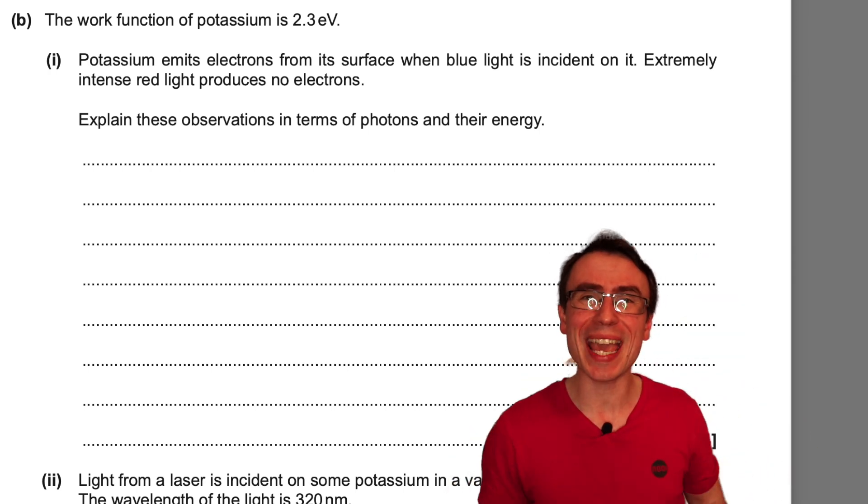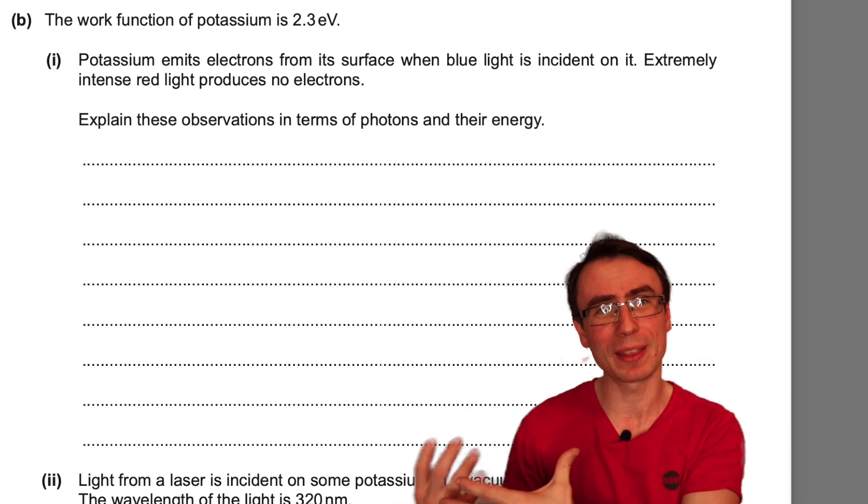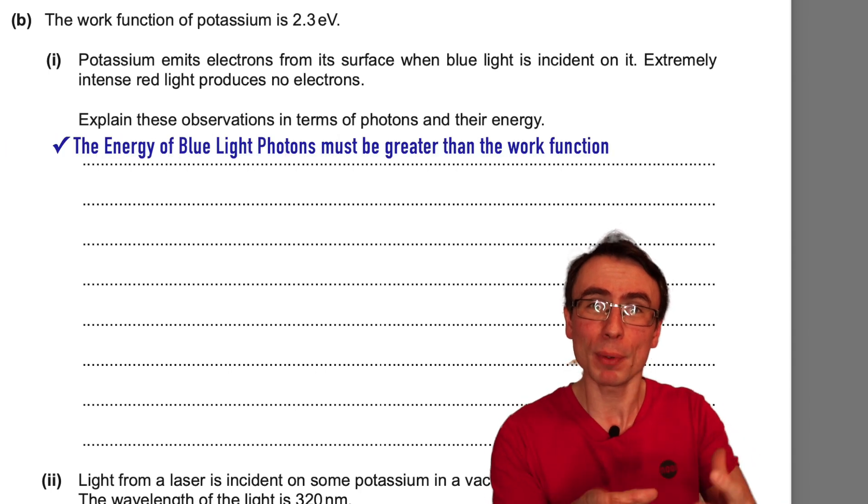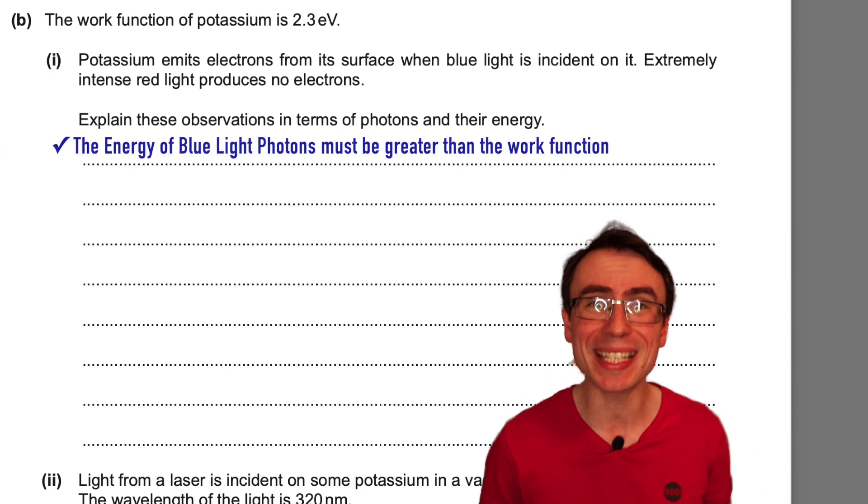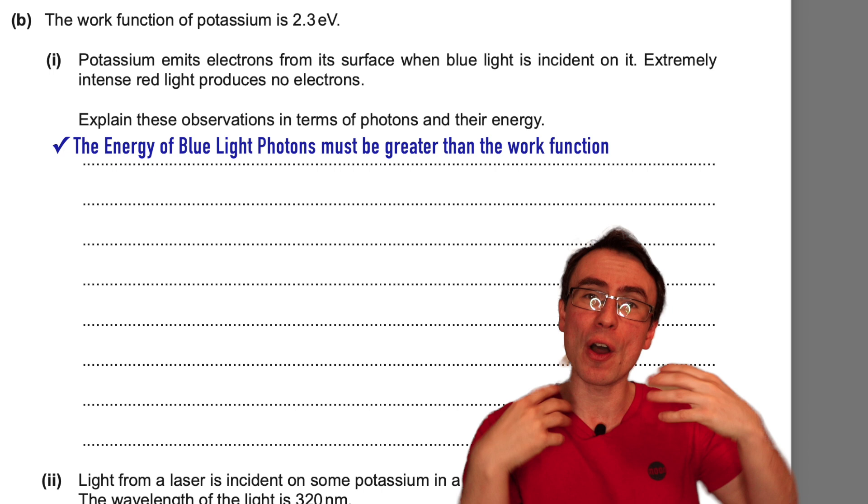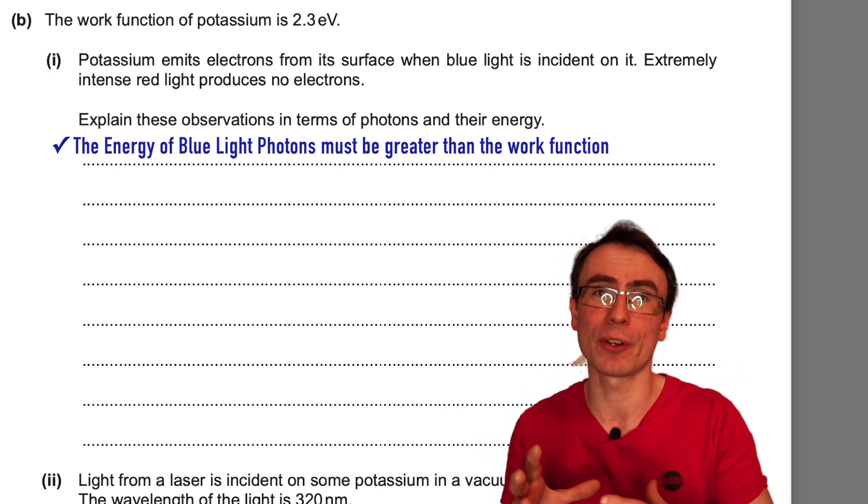Firstly, we need to compare the value of the energy of these photons with the work function. In the case of blue light, because electrons are emitted, the energy of the photons of blue light must be greater than the work function.